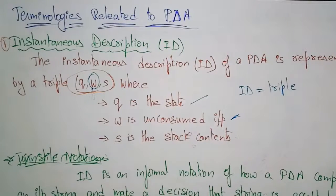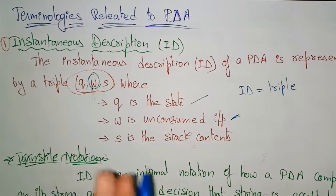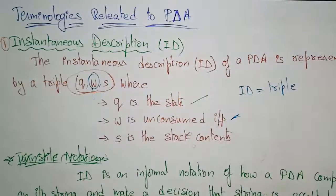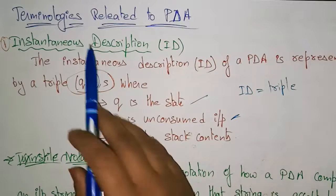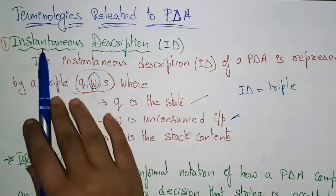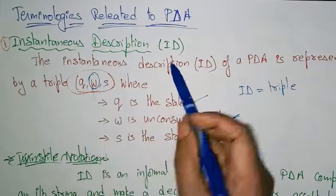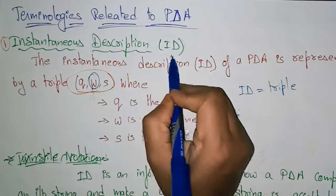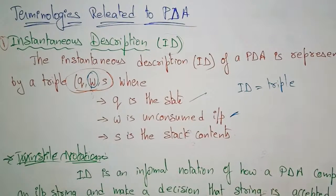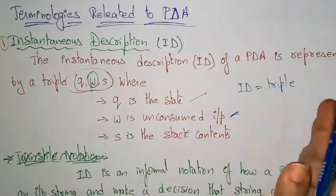Let's continue with the PDA concept. Before going to see the examples, you have to know some terminologies related to the pushdown automata. If you know these terminologies, then you can understand and solve the problems. The first terminology related to the pushdown automata is the instantaneous description, which we simply call ID. We use this ID in the pushdown automata.